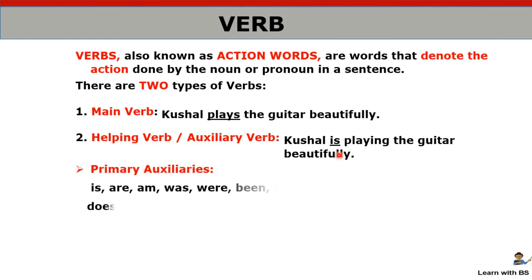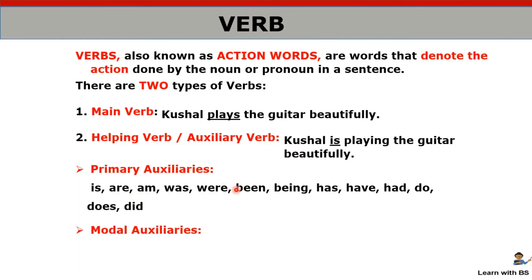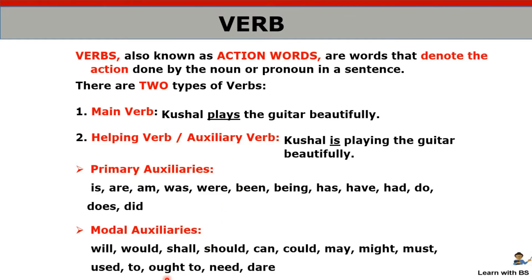Auxiliary verb can be primary — like 'is', 'am', 'are', 'was', 'were', 'have', 'has', 'had', 'do', 'does', 'did' — or it can be modal auxiliary — like 'will', 'shall', 'would', 'can', 'could', 'may', 'might'. So there are two kinds of auxiliary verbs.